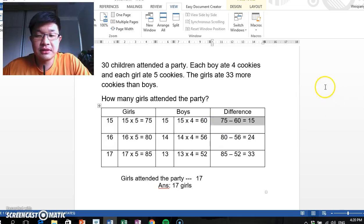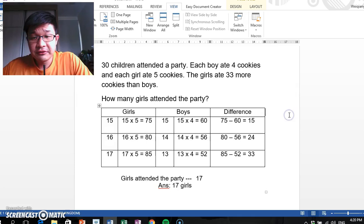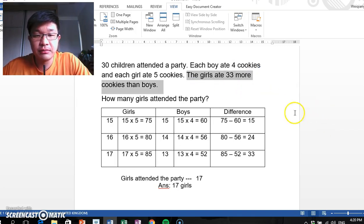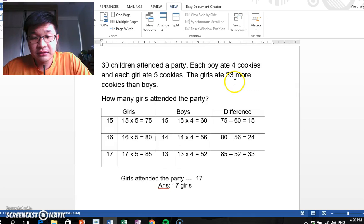The difference in the number of cookies they ate is actually 15. But we want 33 because the condition given is that the girls ate 33 more cookies than the boys. In order for that to happen, students usually know that we need to reduce the number of boys.